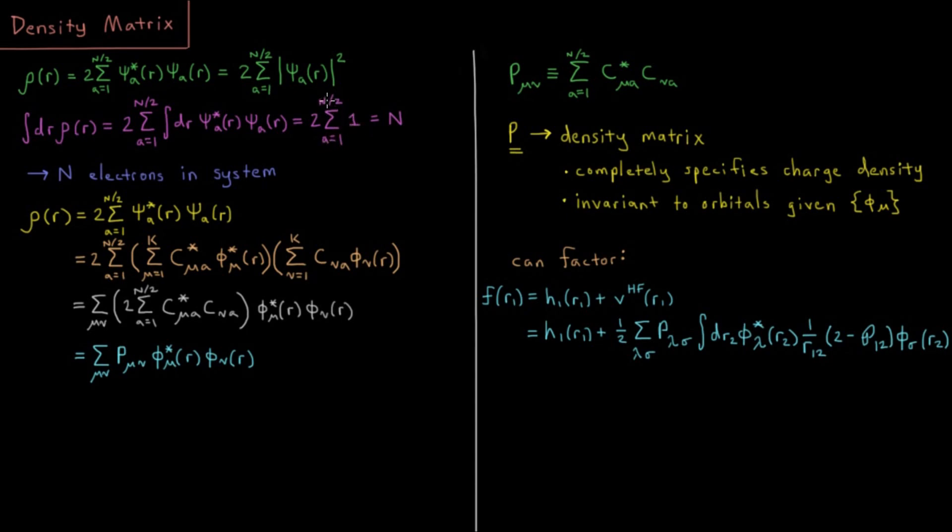So that equals 2 times a sum from a equals 1 to n over 2 of 1. There are n over 2 terms in this sum, each of them is 1, so this is n over 2. We multiply by 2 and we get the expected result, n, which is the total number of electrons in our chemical system.